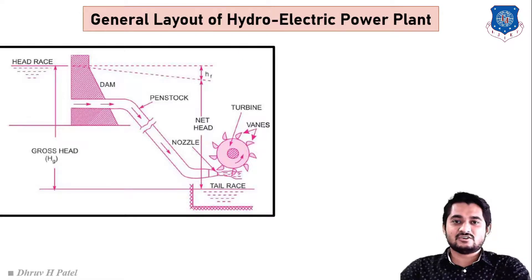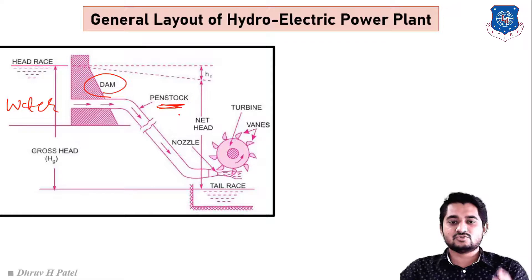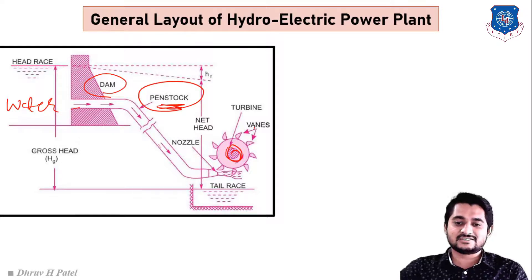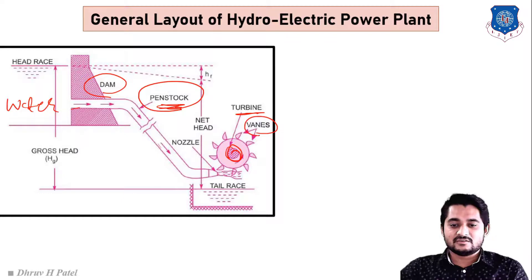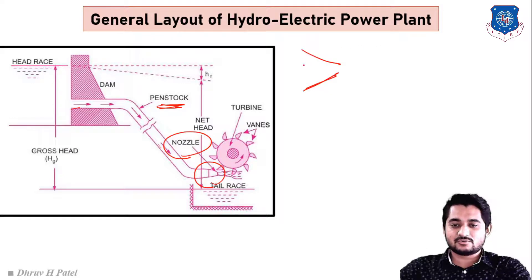Let us understand the basic sketch of the hydroelectric power plant. As shown in the sketch, a dam is on one side with water filled behind it. A penstock — a large diameter pipe — is used to transfer water from the dam to the turbine. At the turbine, there are blades, and a nozzle is attached at the end of the penstock.